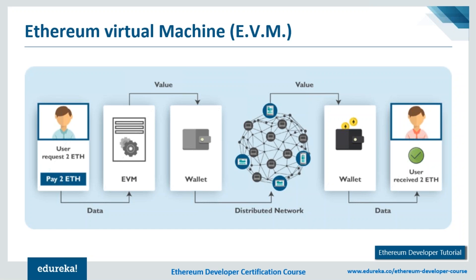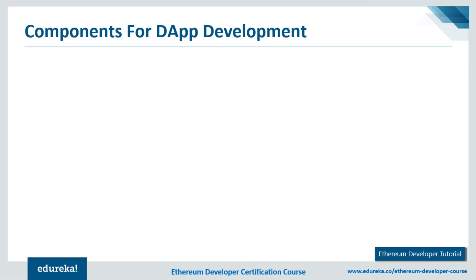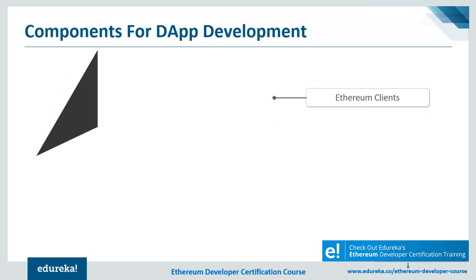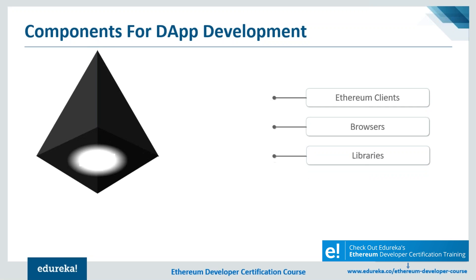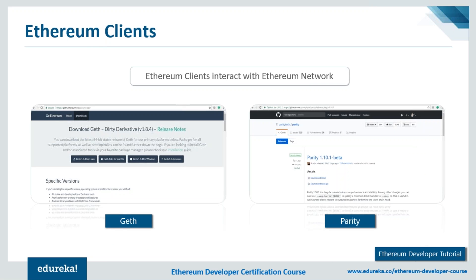Now let's talk about Ethereum's development environment. Just like every other application development, Ethereum's development consists of three key phases: the development starts with the code, the written code is then compiled, and finally tested. For development, you require key components specific to Ethereum: clients, browsers, libraries, frameworks, and front-end tools. Ethereum's clients interact with the Ethereum network.